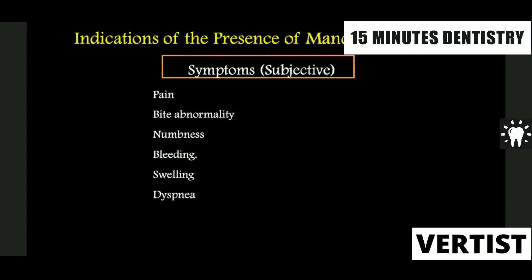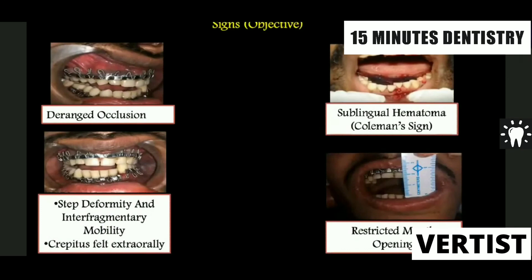This is something one should keep in mind, especially from an exam point of view. The indications for presence of a mandibular fracture: the patient would have pain. Sometimes what happens is that after trauma, the patient may not notice the fracture and the teeth may occlude properly, but the moment the patient tries to bite, they get pain. There could be sudden dislocation or malalignment. There is numbness because the mental nerve is present in that region. There could be bleeding, swelling, and dyspnea if it is a bilateral parasymphysial fracture.